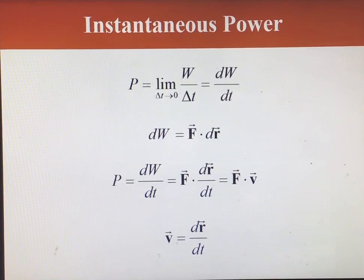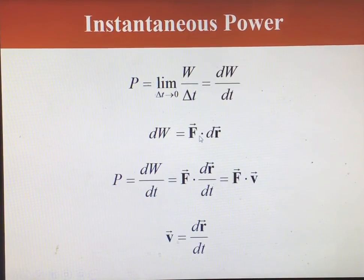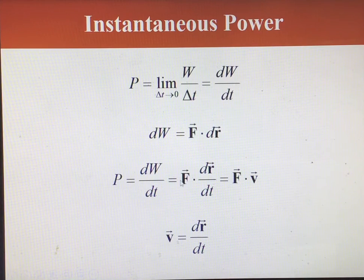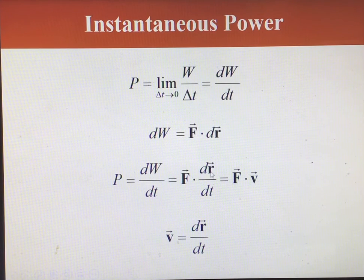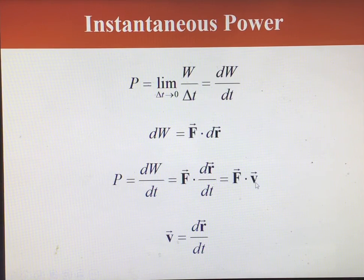We can also write the work as the dot product of the force and the displacement vector. If we take the derivative of this equation and assume the force is not changing as a function of time, we only get the contribution from the displacement changing with time. Since the derivative of the displacement with respect to time is just the velocity vector, we can write the power as the dot product of the force vector and the velocity vector.